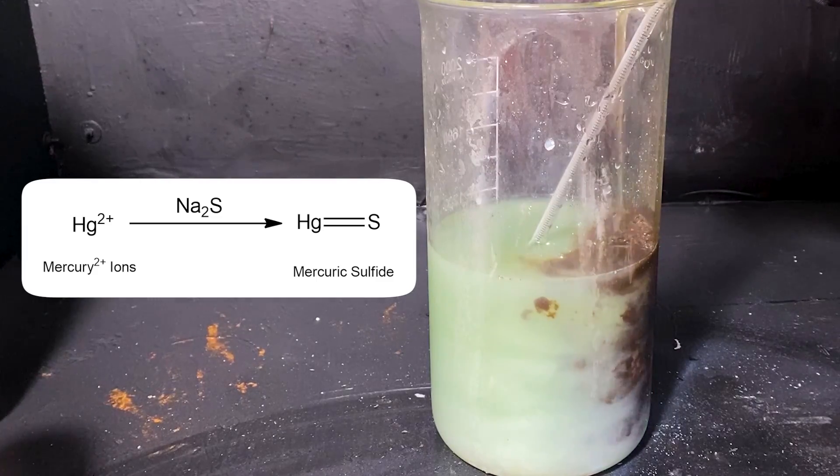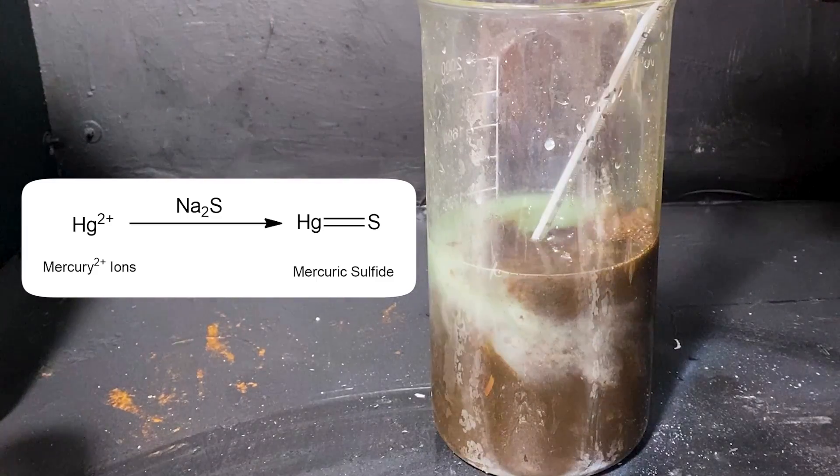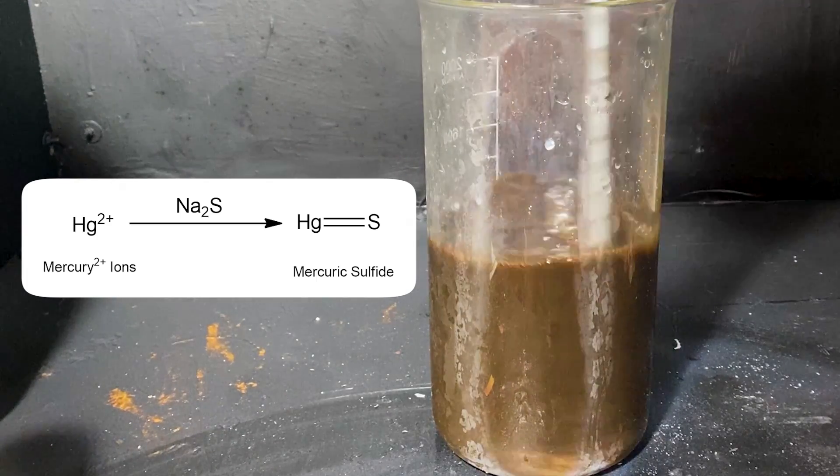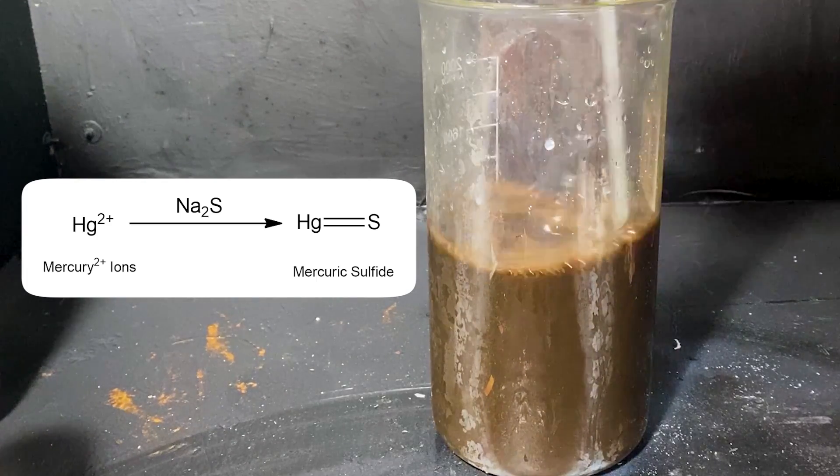Cinnabar has two forms, the alpha form and the beta form. Here it's in the black beta form, as I've just crashed it out from the solution. Naturally occurring cinnabar is in the red alpha form, due to a different process of formation of the mercuric sulfide.